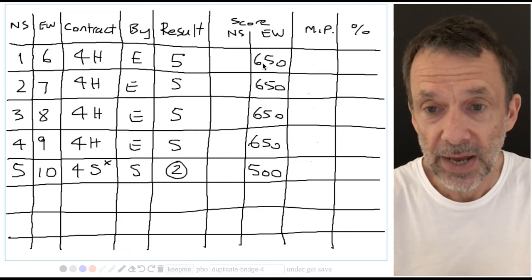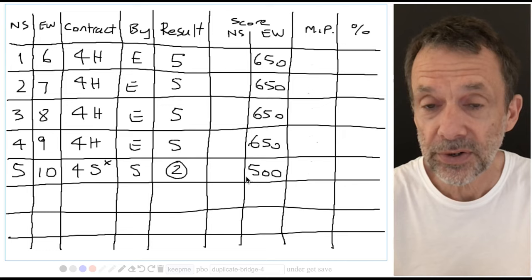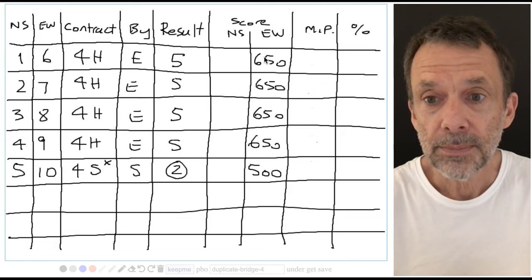Think of this as minus 650. So minus 650 does not beat minus 650, minus 650, minus 650. And minus 650 does not beat minus 500. Minus 650 is worse than minus 500. So pair one beat nobody.